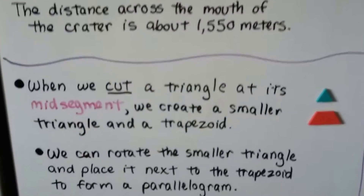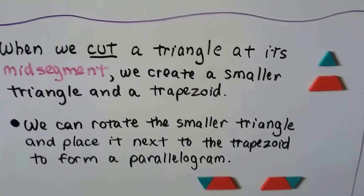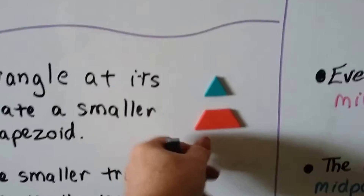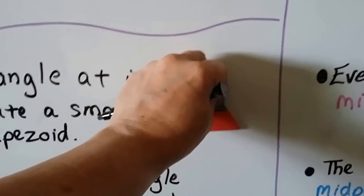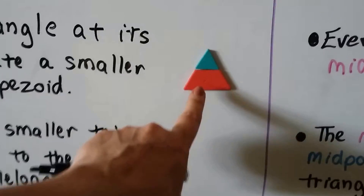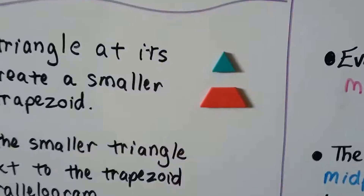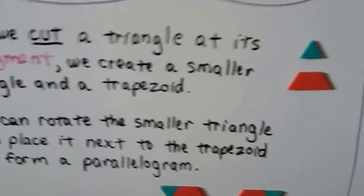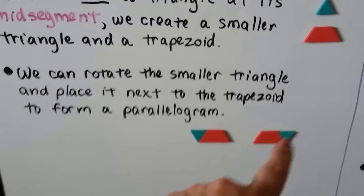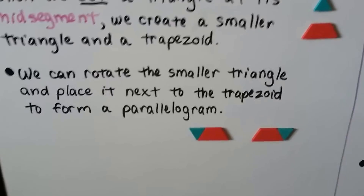When we cut a triangle at its mid-segment, we create a smaller triangle and a trapezoid. If we cut it right here at its mid-segment, look what happens if I squeeze them together — it makes a triangle. We get a smaller triangle and a trapezoid, and we can rotate the smaller triangle and place it next to the trapezoid, and it's going to make a parallelogram.